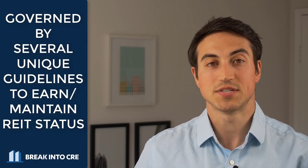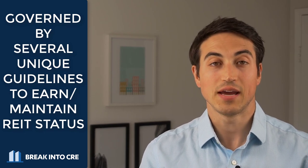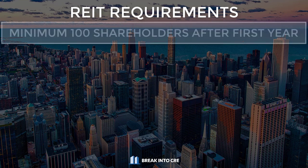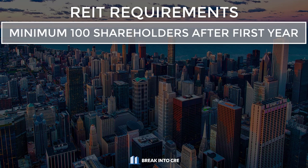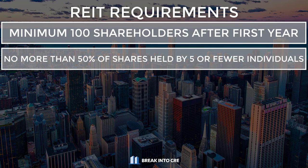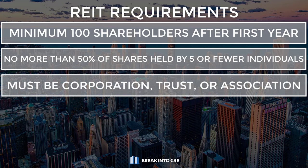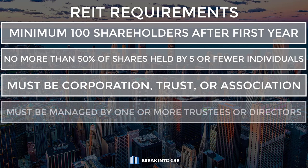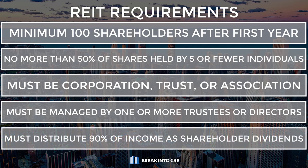In general, the biggest distinction between a REIT and another real estate investment firm is that a REIT is governed by several unique, specific guidelines imposed by the IRS in order to qualify as a REIT. Some of the biggest requirements include: a minimum of 100 shareholders after its first year of existence; no more than 50% of shares held by five or fewer individuals during the last half of the taxable year; the company must be a corporation, a trust, or an association; managed by one or more trustees or directors; and perhaps most importantly, the company must distribute 90% of the REIT's annual taxable income as shareholder dividends.